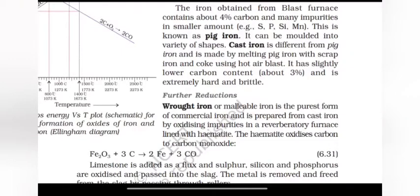It can be molded into a variety of shapes. Cast iron is different from pig iron and is made by melting pig iron with scrap iron and coke using hot air blast. It has slightly lower carbon content about 3% and is extremely hard and brittle. Further reduction,